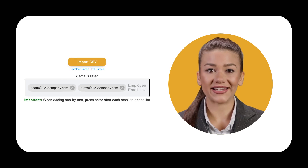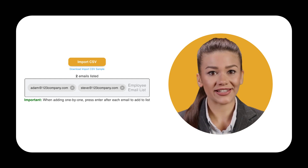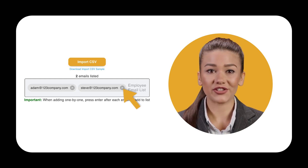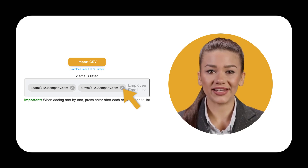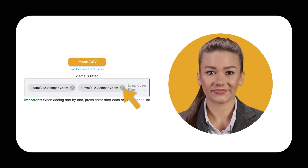If at any time an employee is no longer employed or eligible to receive your private employee discount, find their email and delete it from the list — they will no longer be able to view and redeem. Alternatively, if a new employee is eligible, have them download the app and update the perk by adding their employee's account email address.